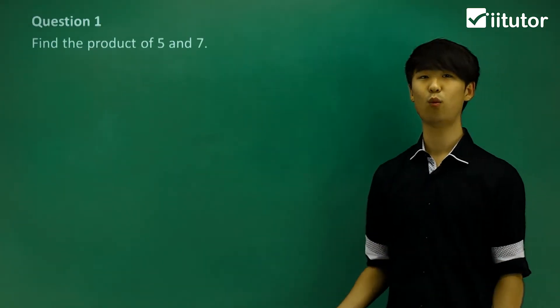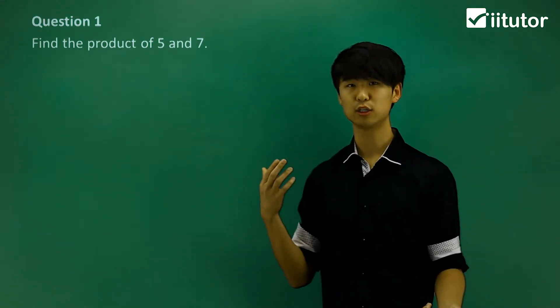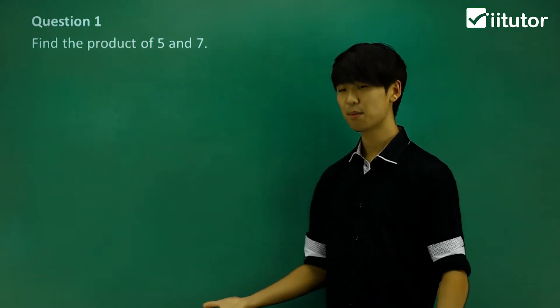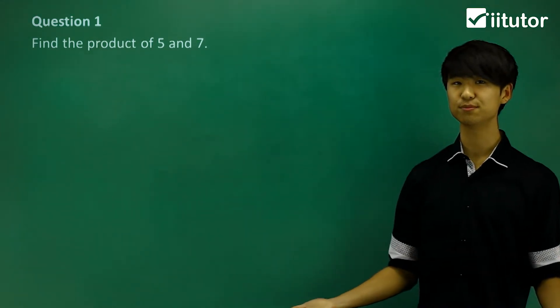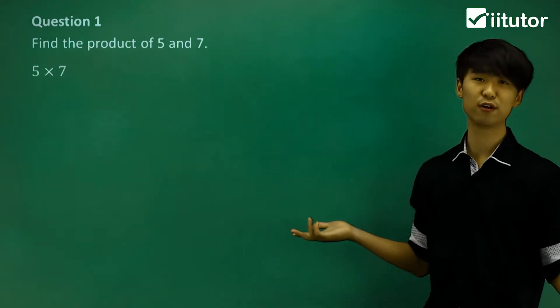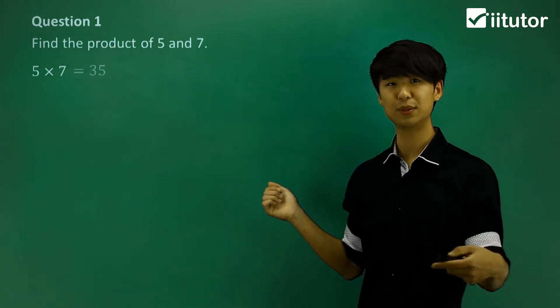Now let's take a look at question one. It asks us to find the product of five and seven. What did we just say? Product is multiplication. So the product of five and seven is just five multiplied by seven, which we know is going to be thirty-five.